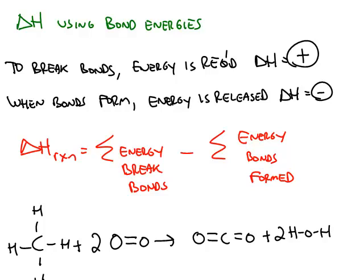Yet another way to find delta H is to use bond energy values. This works because whenever you break a bond, that requires an input of energy. That's an endothermic process. When you form a new bond, energy will be released.